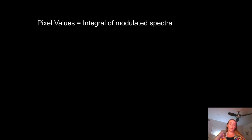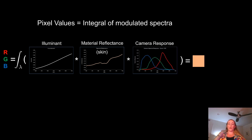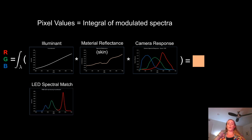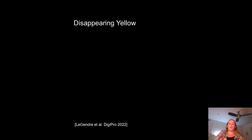The world is acting as a spectral renderer. Pixel values are produced by integrating over all wavelengths a fully spectral modulation of a scene illuminant by the reflectance of the material being illuminated — for instance, a reflectance spectrum for skin — integrated against the camera spectral response for each color channel. With LED-reproduced illumination, the colors are going to be different whether we try to match the spectrum or the color of the original illuminant. The dip between the green and the red LEDs at about 550 to 600 nanometers is especially problematic, particularly for yellow and orange materials, where we're totally missing energy in that part of the spectrum.